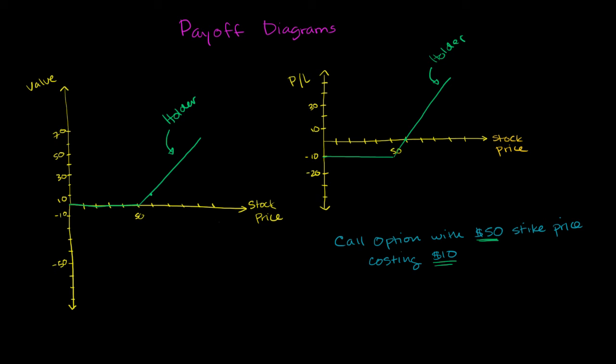If the holder has the right to buy at $50, someone must be selling them that right. Someone must be agreeing to say, hey, I will essentially sell that to you at that price.